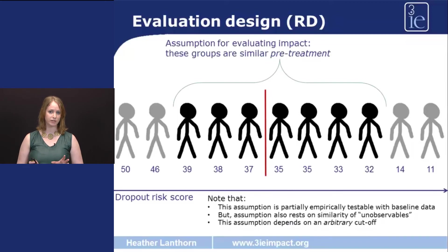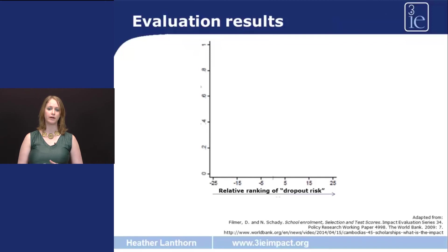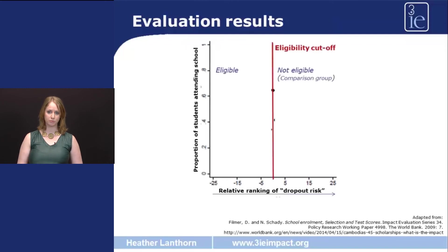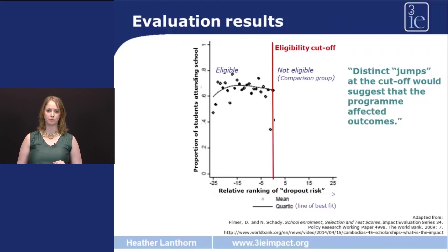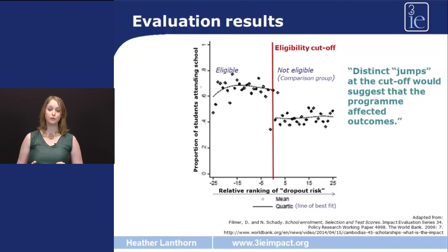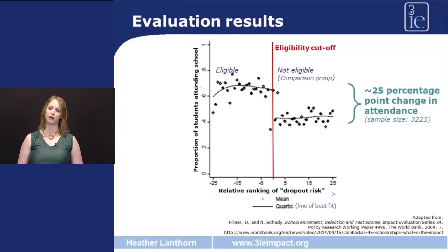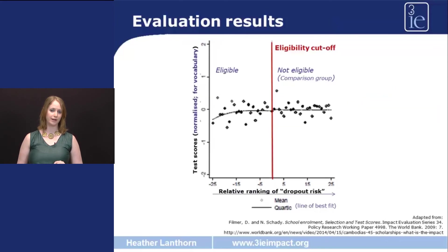The main identifying assumption we need for this is that the students on either side of the cutoff were truly the same prior to being offered the program, and the program is the only thing that makes them different from each other. Now let's look at some of the results. On this graph, the x-axis has the relative risk of dropping out, and the y-axis has the proportion of students that are attending school. We see the eligibility cutoff, such that those on the left will be those offered the scholarship and on the right those that were not. This is the classic graph you want to see in a regression discontinuity design — we expect to see a distinct jump between those that were eligible and those that were not in the outcome of interest. And indeed, in this case we do see that jump: there's a 25 percentage point difference in attendance between those who were offered the scholarship and those who were not.